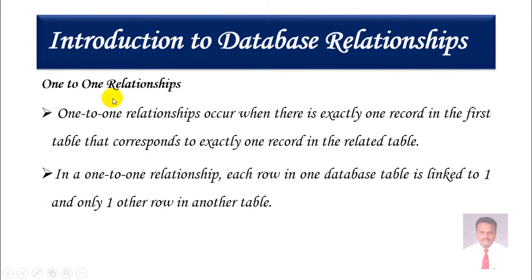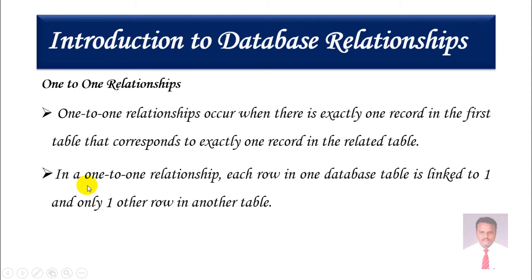First, let me teach you what a one-to-one relationship is. A one-to-one relationship occurs when there is exactly one record in the first table that corresponds to exactly one record in the related table. In a one-to-one relationship, each row in one database table is linked to one and only one other row in another table.